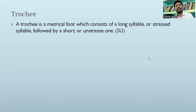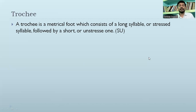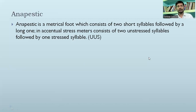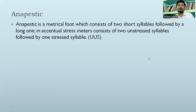Trochee is a metrical foot which consists of a long or stressed syllable followed by a short or unstressed syllable. An anapaest is a metrical foot which consists of two short syllables followed by a long one. In essential stress meters, it consists of two unstressed syllables followed by one stressed syllable.